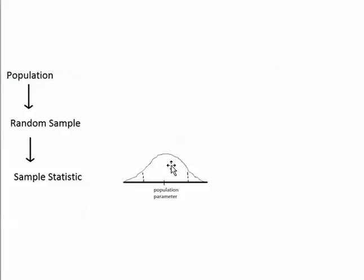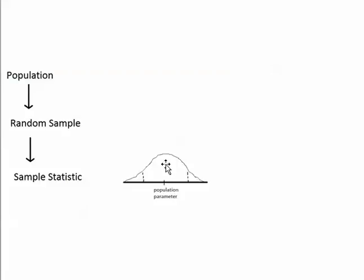That probability depends on the percentage of possible samples that are in this area between these boundaries. If 70% of the possible samples are in this area, then there's a 0.70 probability of getting a sample from this area. Basically, the probability that the sample will come from this area between these two points depends on the percentage of samples that are in this area.